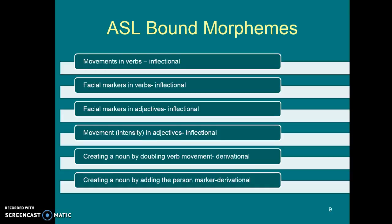Another bound inflectional morpheme in ASL is the facial markers that can be added to verbs — the tongue out or the bared teeth — and each of these changes the grammatical use of the verb without changing the part of speech. Similarly, with adjectives, we can change both the movement or the facial expression. You can sign 'sick,' or do it with a tense-then-quick movement to mean 'very sick.' You can sign 'fast,' or go from tense to quick to mean 'very fast.' And you can sign 'big' with the 'cha' facial expression to mean 'very big,' or with pursed lips to mean 'sort of big.'